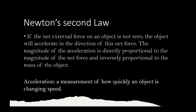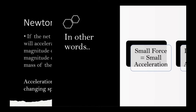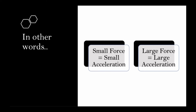Newton's second law: if the net external force on an object is not zero, the object will accelerate in the direction of this net force. The magnitude of the acceleration is directly proportional to the magnitude of the net force and inversely proportional to the mass of the object. Acceleration is a measurement of how quickly an object is changing speed. In other words, a small force gives small acceleration and a large force gives large acceleration.